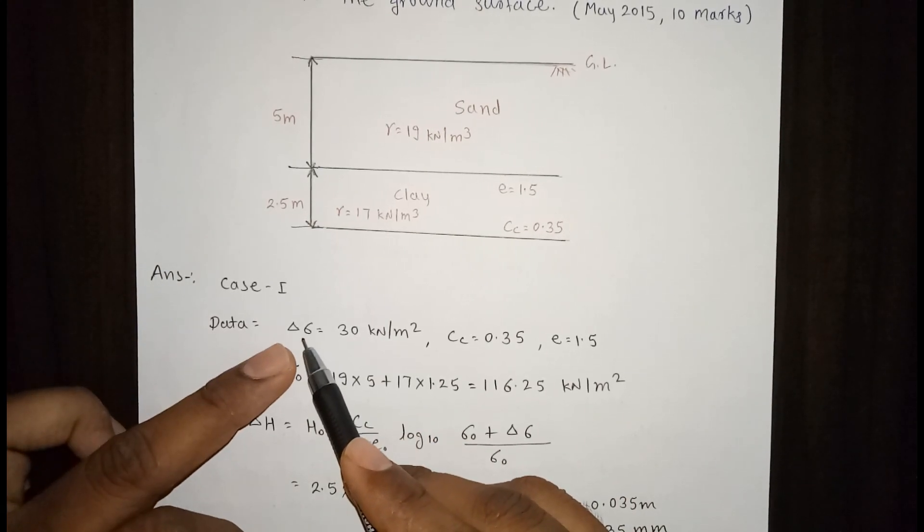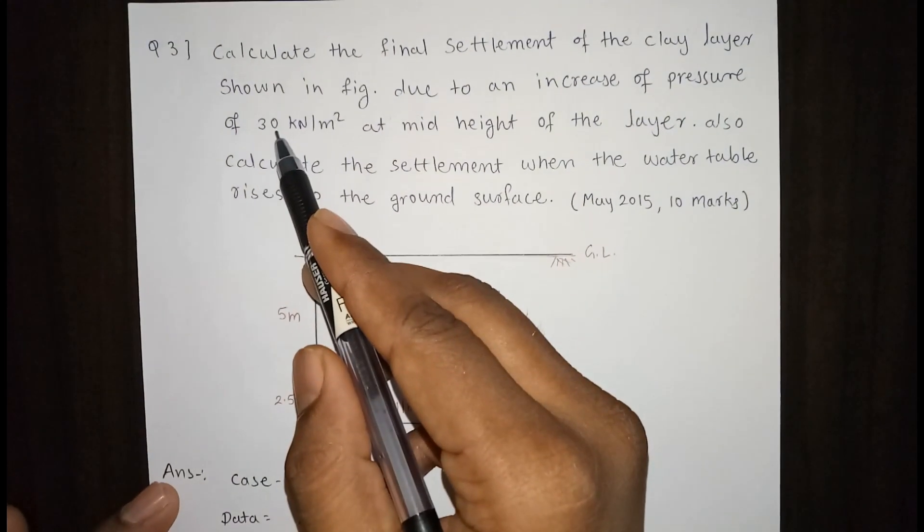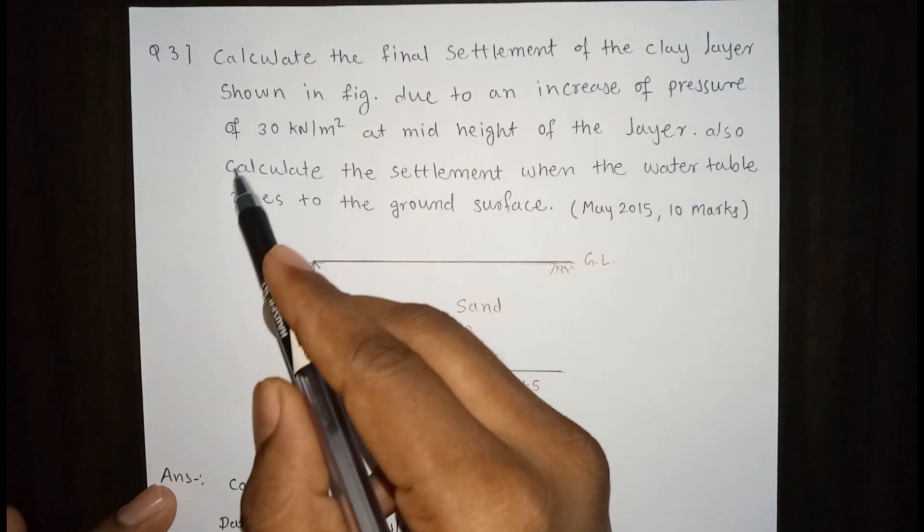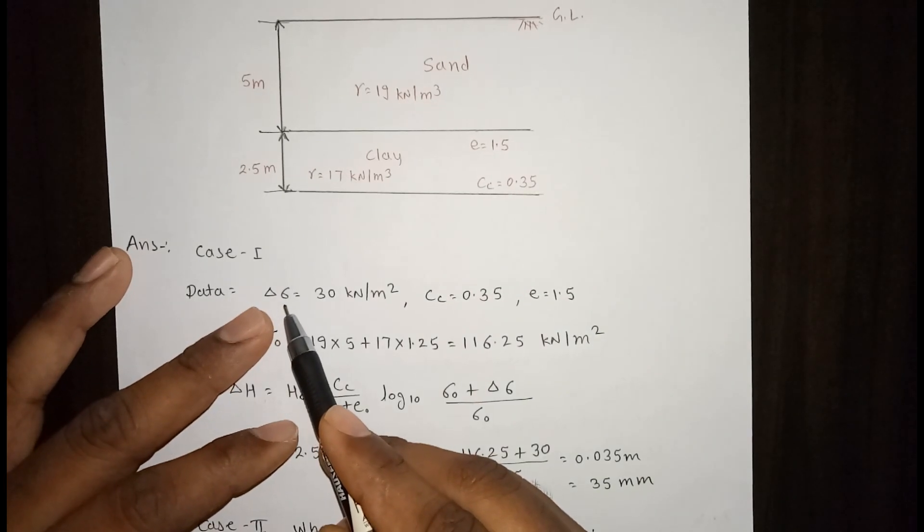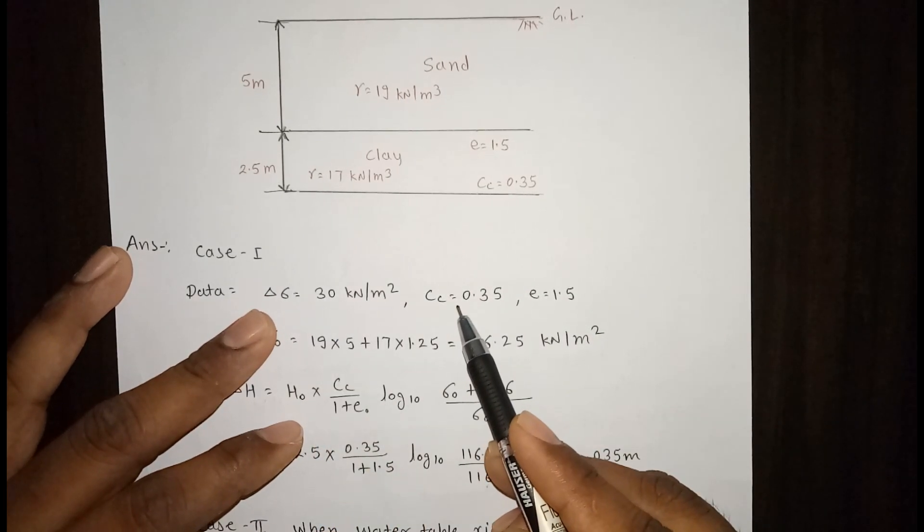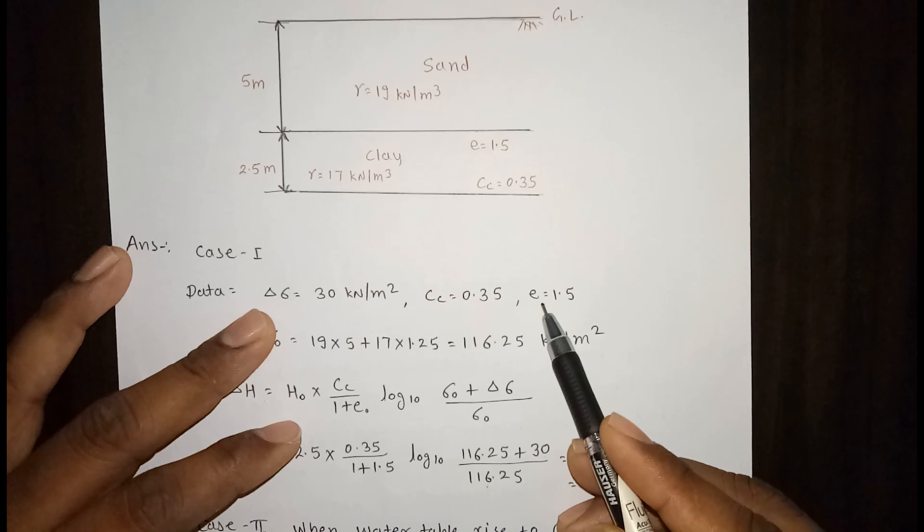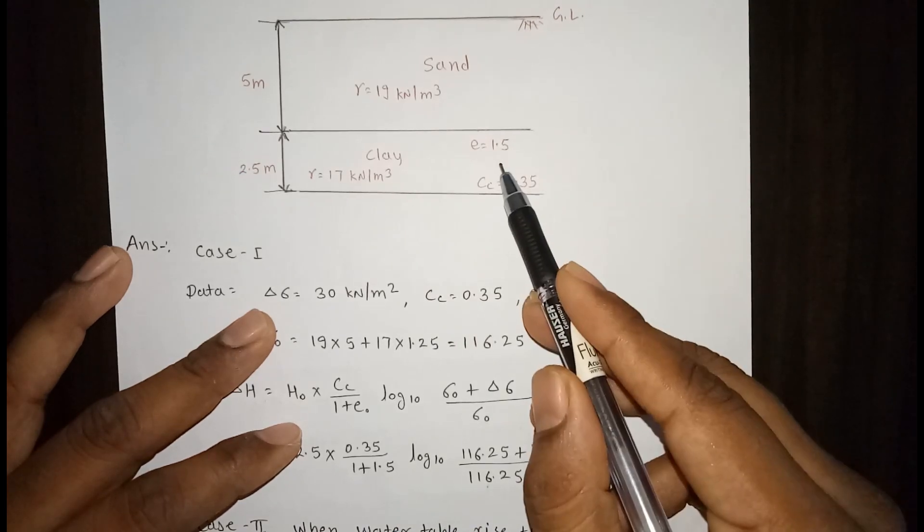So delta sigma is given to us, that is the increase in pressure is 30 kN per meter square. First we will write down the given data. Delta sigma is 30 kN per meter square, cc is 0.35, void ratio e is 1.5.